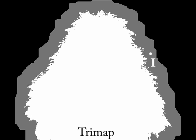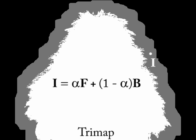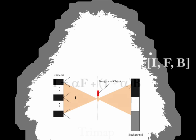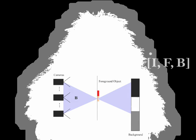The point i in the unknown region is a linear combination of two random variables f and b, given the matting equation upgraded to work for random variables. We assume alpha is constant across all cameras, which means that the transparency of a point is view-independent. To solve for alpha, we need i, f, and b; however we can only observe i.